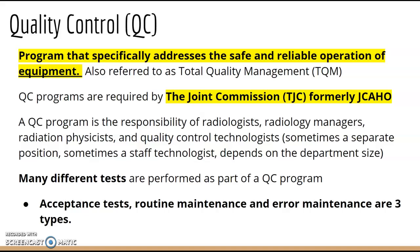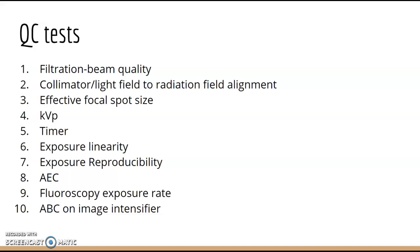QC involves you as technologists — you are the frontline people with the equipment and patients. There's also a lot of background testing performed by others, but you're really the frontline person to report when a machine isn't working properly. The three main types of QC tests are acceptance testing, routine maintenance, and error maintenance — focus on these for your board review.